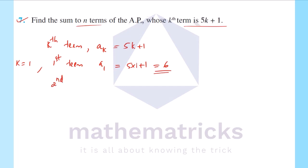For the second term, a2 equals 5 into 2 plus 1, that is equal to 10 plus 1, that is 11.